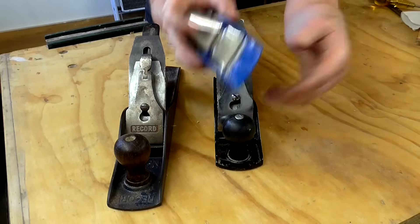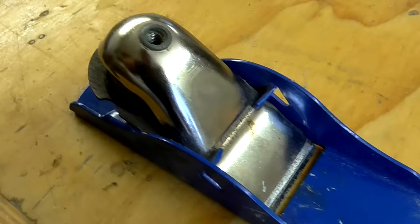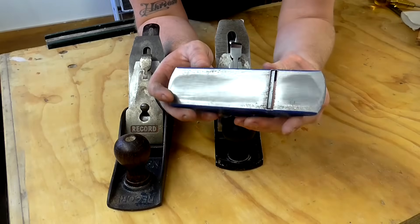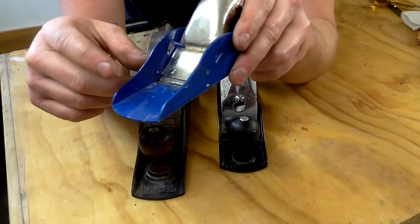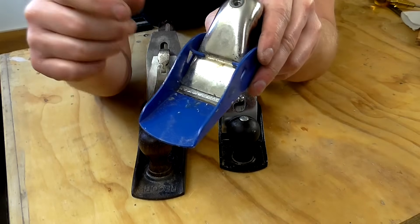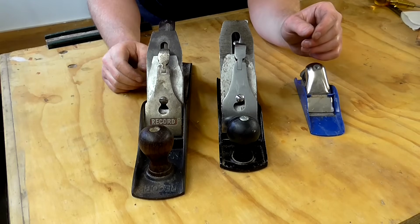And this one here, the smallest of the three, is a block plane by Draper. And I probably use this second most compared with the record. And I tend to use this one for bevelling edges and things like that. As with most block planes, you'll see here that the bevel of the cutting iron is facing upwards as opposed to downwards. Whereas the bevel on the cutting irons on my other hand planes are all beveled down.